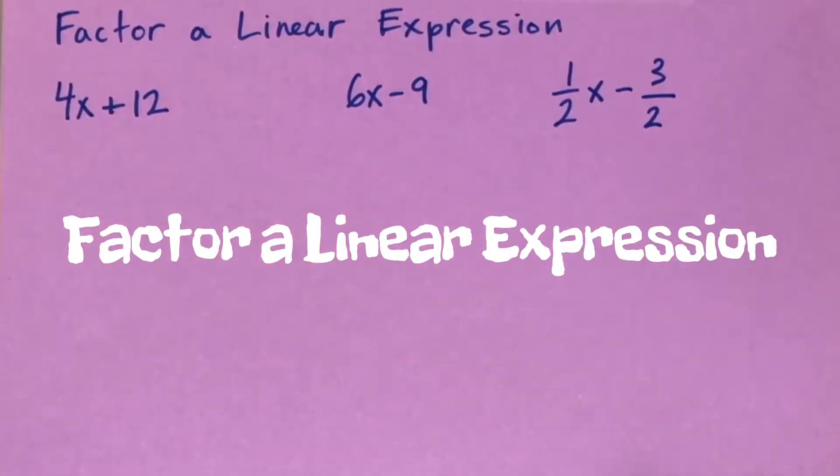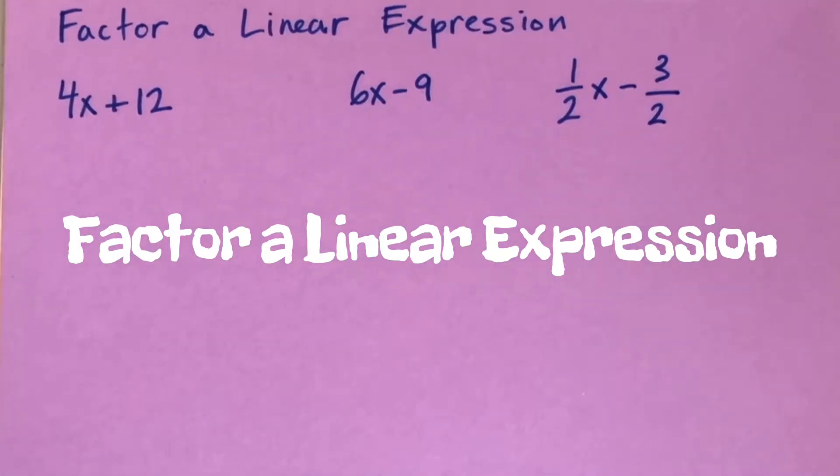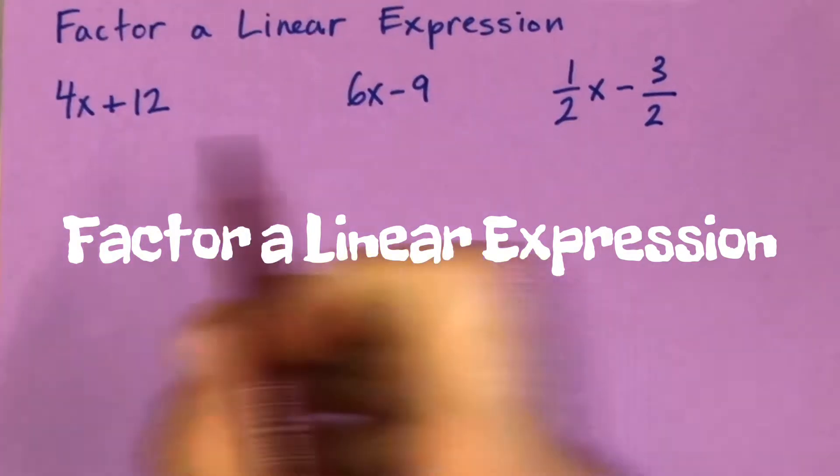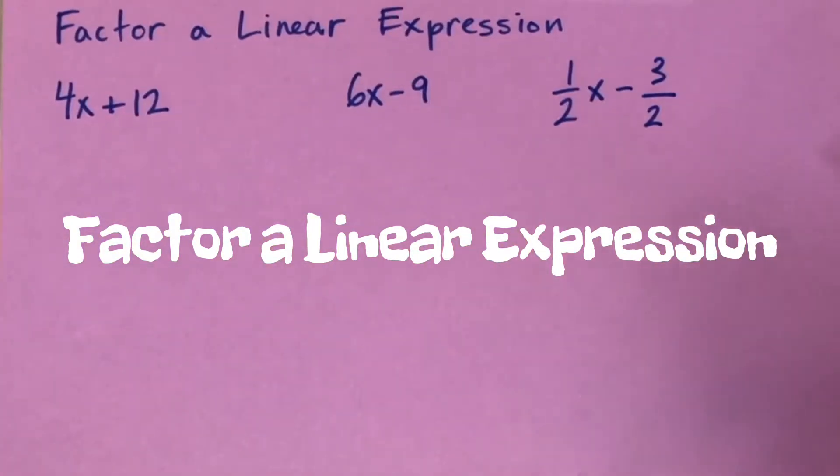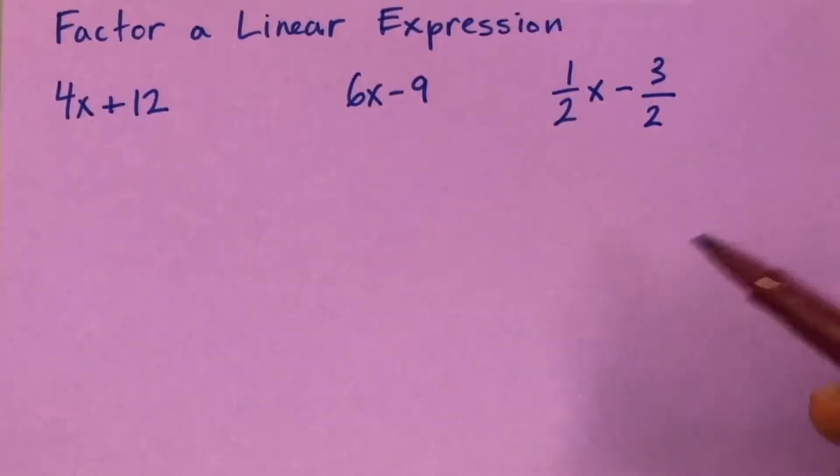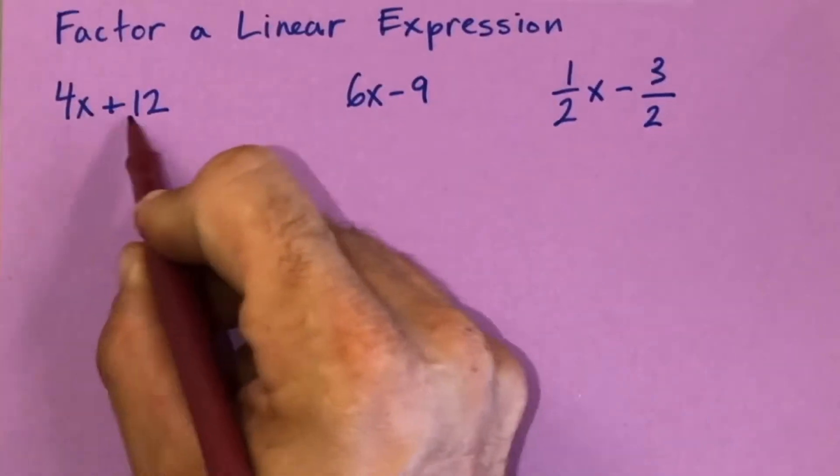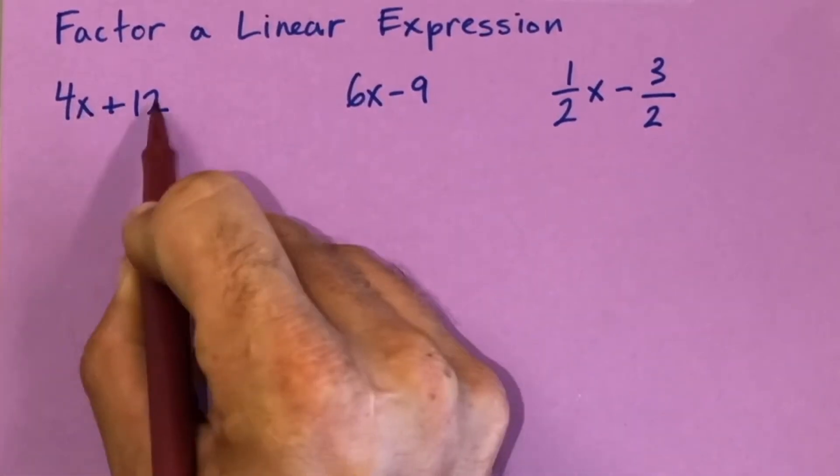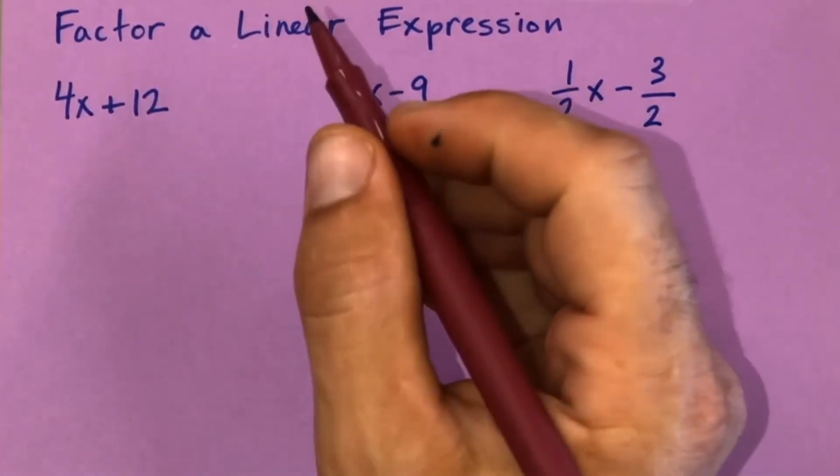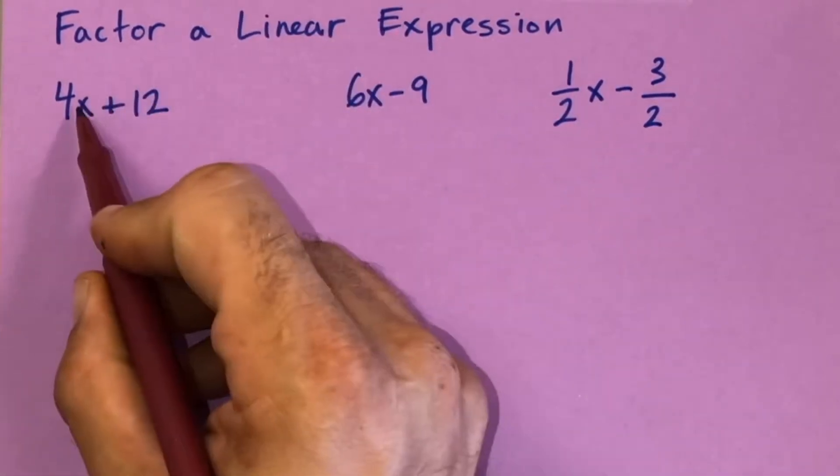Today we're taking a look at factoring linear expressions. I've got a couple simple examples here. Basically what we're doing is using a greatest common factor to pull and reduce and get a common factor from these two terms.